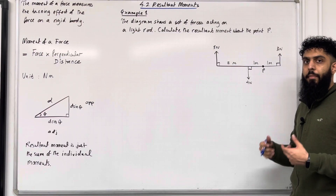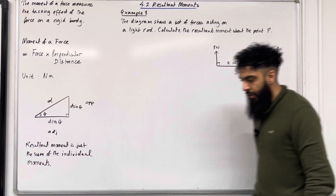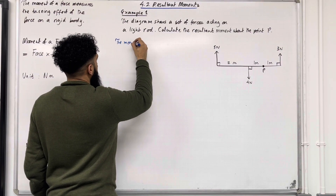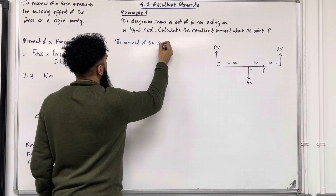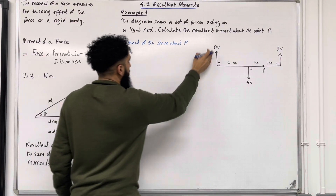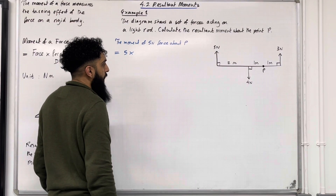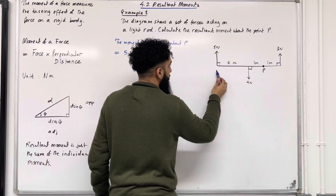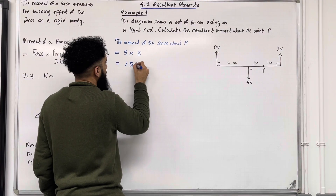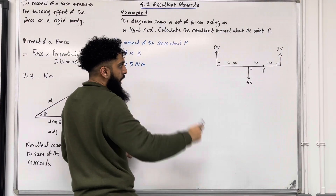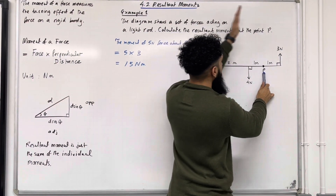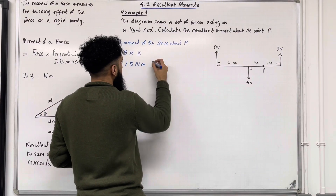We must calculate the moment of each of these individual forces. Starting with the 5 newton force: the moment of the 5 newton force about P equals 5 newtons multiplied by the perpendicular distance from P, which is 3 meters. So 5 times 3 gives 15 Newton meters. If I hold the point P and apply this 5 newton force, it takes the entire body clockwise. So we have 15 Newton meters going clockwise.